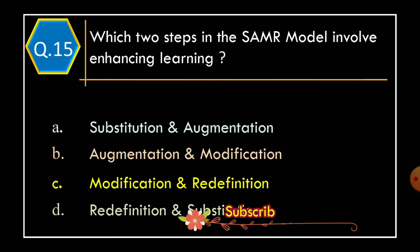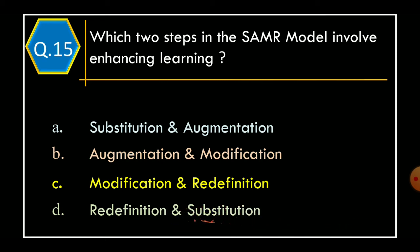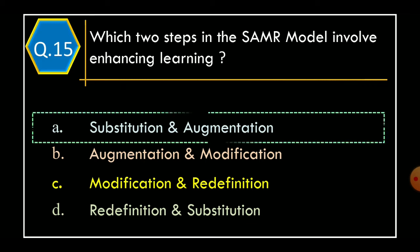Question 15: Which two steps in the SAMR model involve enhancing learning? Option A: Substitution and Augmentation. Option B: Augmentation. Option C: Modification and Redefinition. Option D: Redefinition and Substitution. And the correct option is Option A: Substitution and Augmentation.